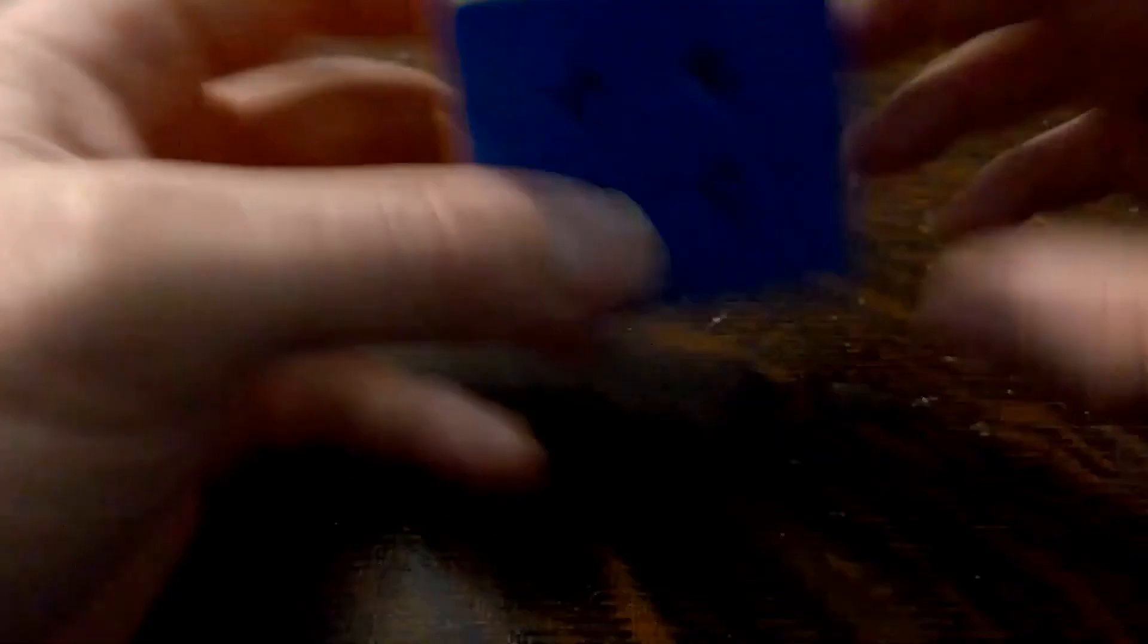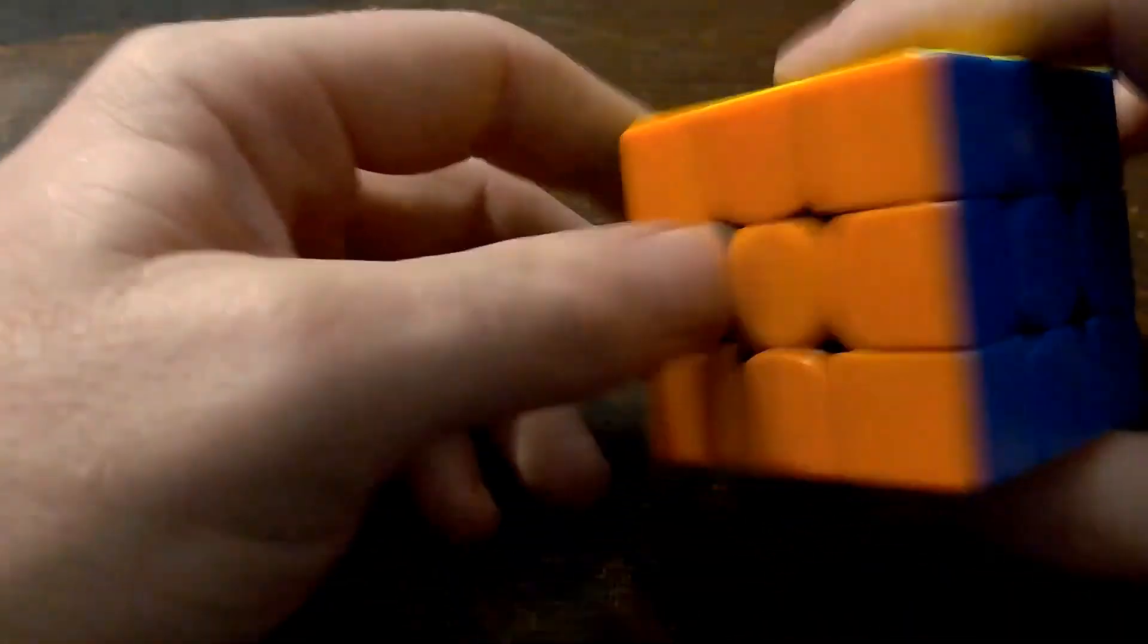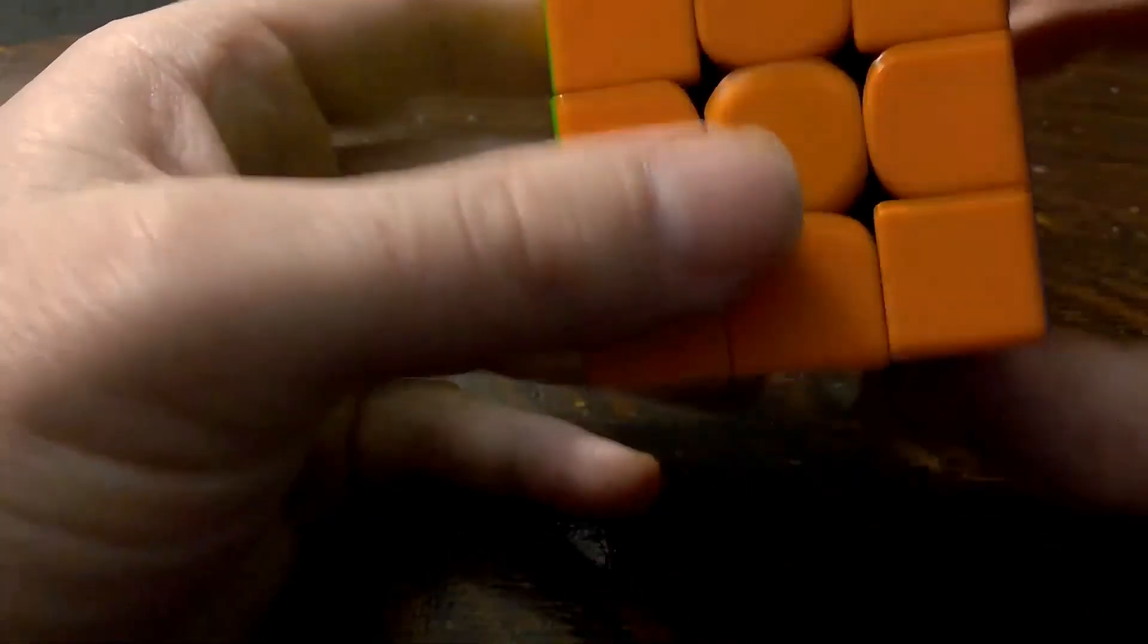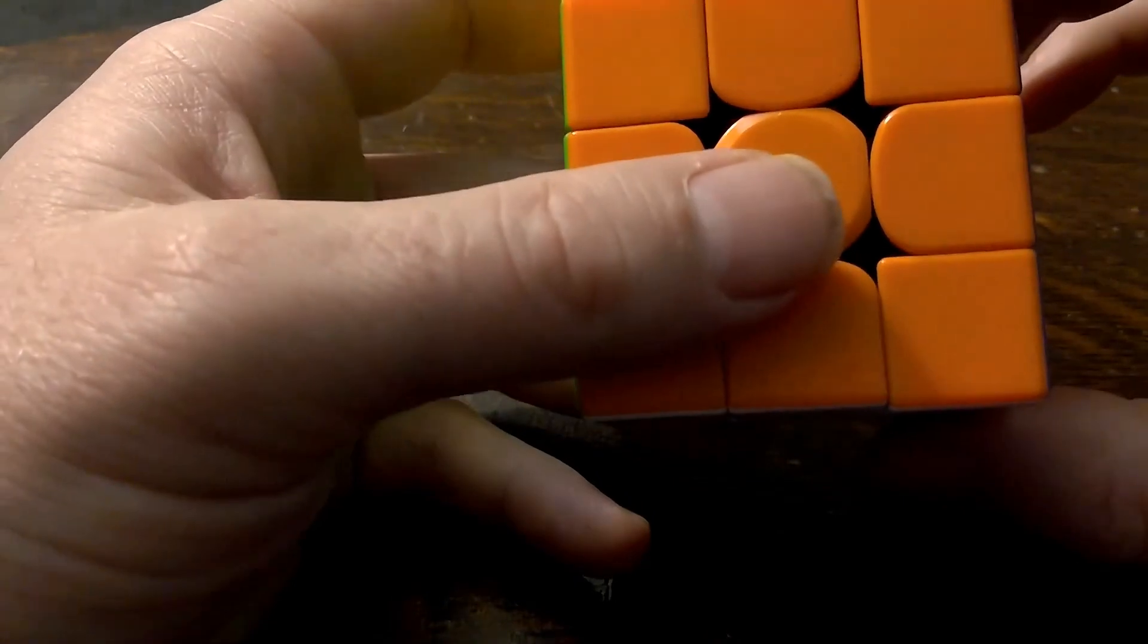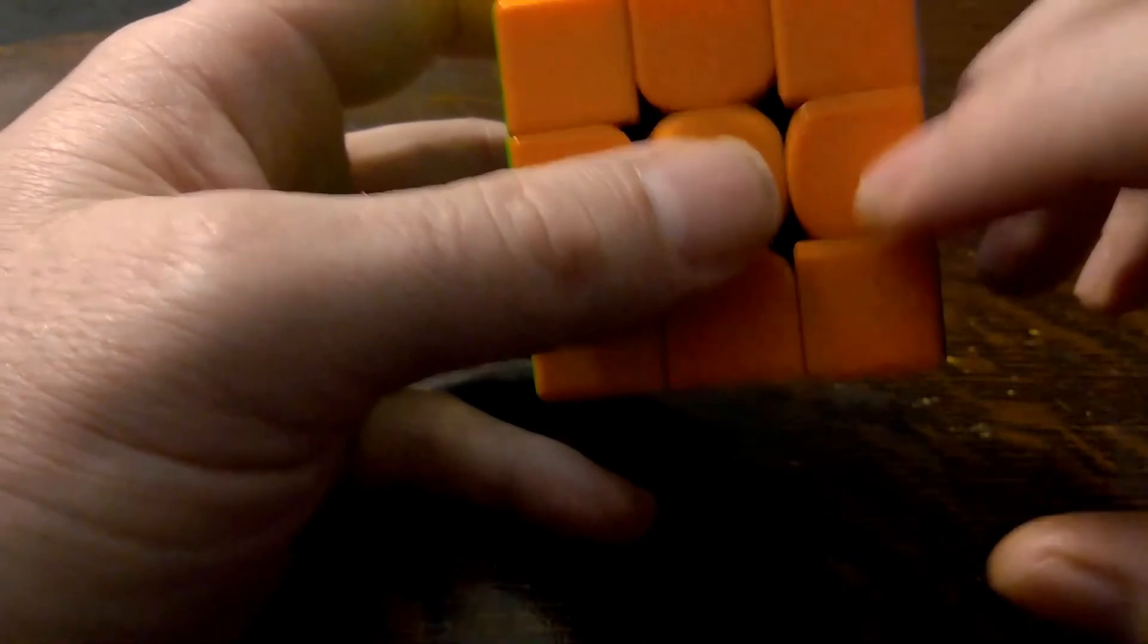By happenstance, by pure chance, up here, while you're doing F2L, you can be like, oh, I know how to do this, this is a Sexy Move, and you can do the right number of Sexy Moves, and get those in place, get those pieces correctly inserted into the slot using the Sexy Move.